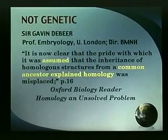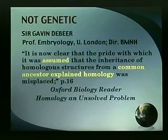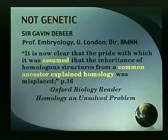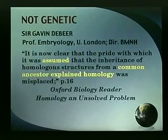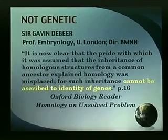The similarities of the hand of the mammal are supposed to be the result of genetics — inheriting common genes. But what we have found from genetics is this is not the case. Sir Gavin DeBeer is one of the leading authorities in that field. Here in the Oxford Biology Reader, he says: it's now clear that the pride with which it was assumed that the inheritance of homologous structures from a common ancestor explained homology was misplaced. Homology involves similarities that indicate evolution inherited from common genes — that's how Darwin defined it. We thought common genetics explained this, but he says that pride was misplaced, for such inheritance cannot be ascribed to identity of genes.